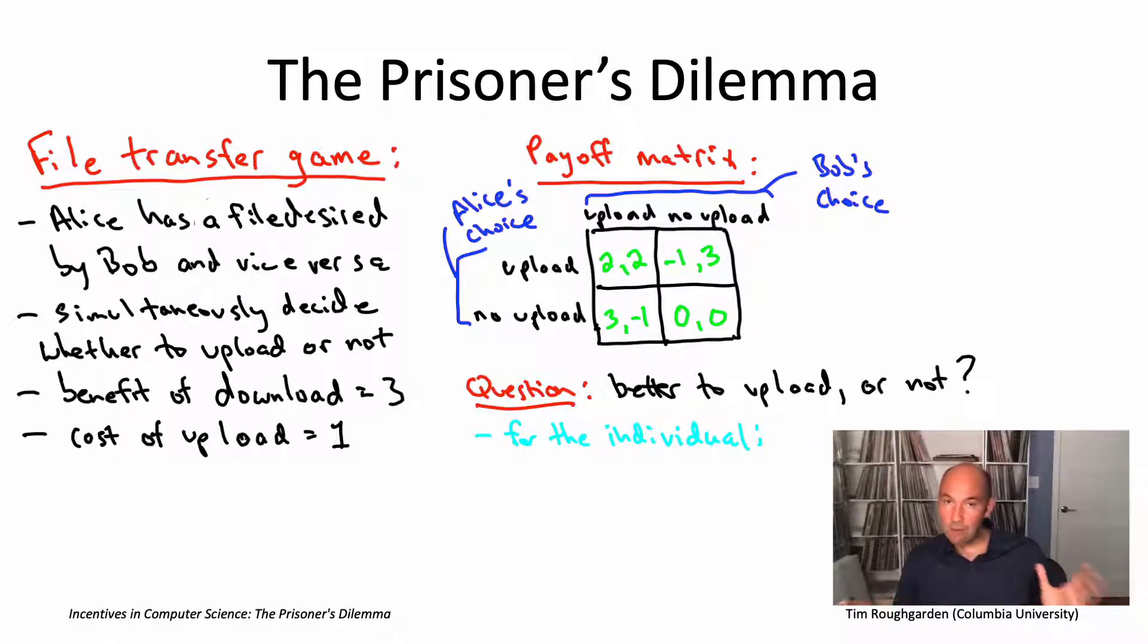So in other words, in both cases, doesn't matter what Bob is doing, doesn't matter if he's uploading or if he's not uploading, I, Alice, will always be better off by not uploading. If Bob is uploading, I'll get a three instead of a two. If Bob's not uploading, I'll get a zero instead of a minus one. But either way, I'm better off from not uploading. And if you think about it, of course, everything's symmetric from Bob's perspective. So Bob also has a very strong incentive to not upload because it always gives them a higher payoff no matter what Alice chooses to do. So that seems like an unstoppable force pushing the players to both not upload, resulting in this lower right outcome where both of the players get a payoff of zero.